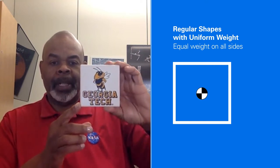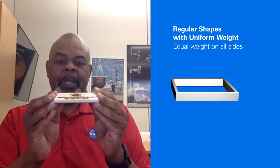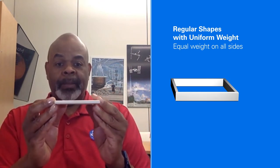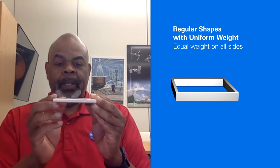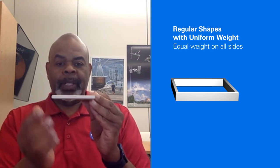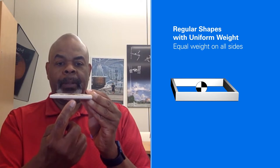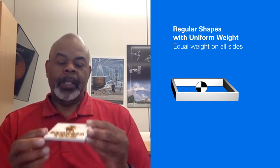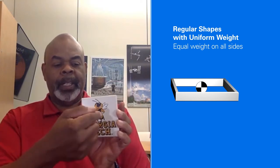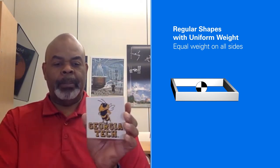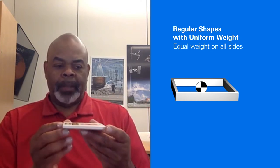Since this is a three-dimensional object, it has thickness. Again, left, right, top, bottom is still uniform. You could say the center of gravity is located in the middle of the thickness. So in this particular case, the center of gravity is inside this coaster, in the middle of the square, pretty much halfway between the top and the bottom.